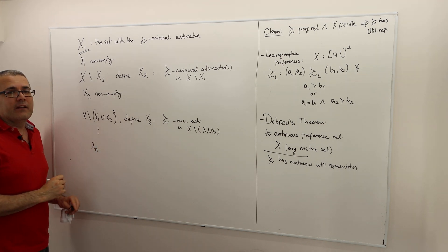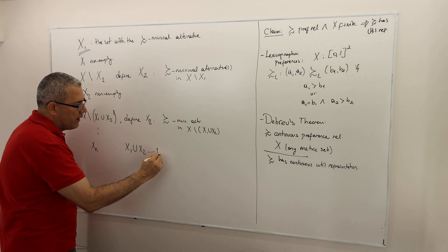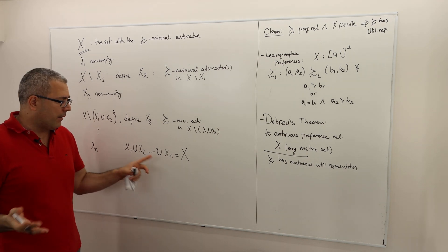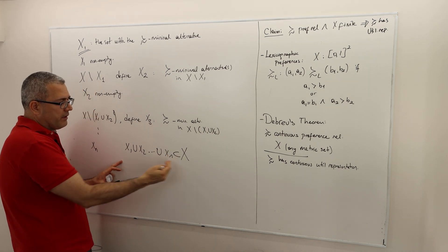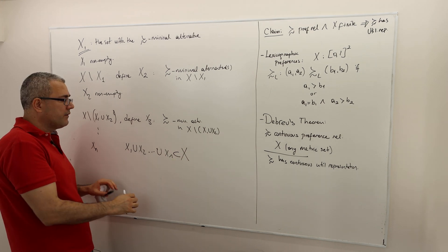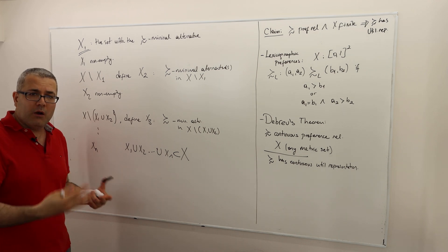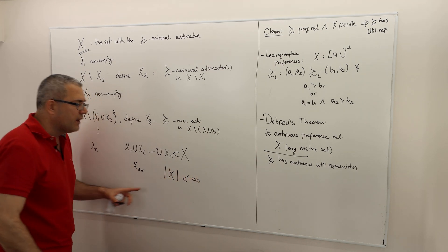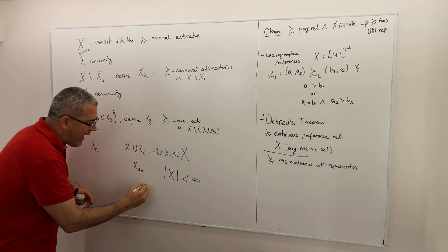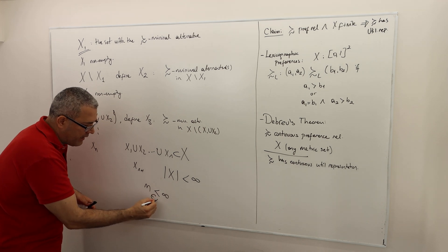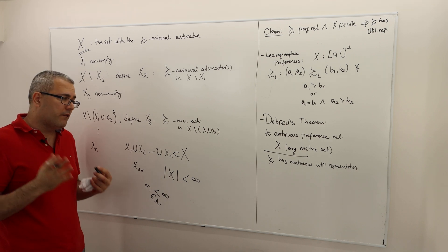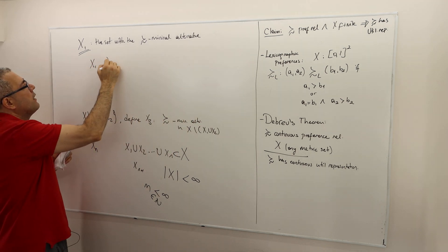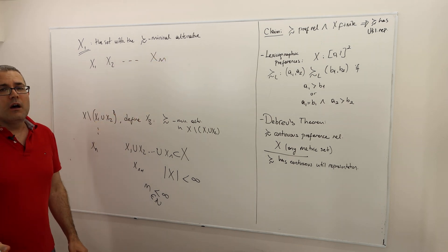Define this until xm. If x1 union x2 all the way to xm gives me the full set X, then I'm done. If that union is still a proper subset of X, keep going and define xm+1, xm+2. The key point is: since X is finite, this process must stop at some finite m. So let's suppose m is the point where we stop, and I have x1, x2, all the way to xm.